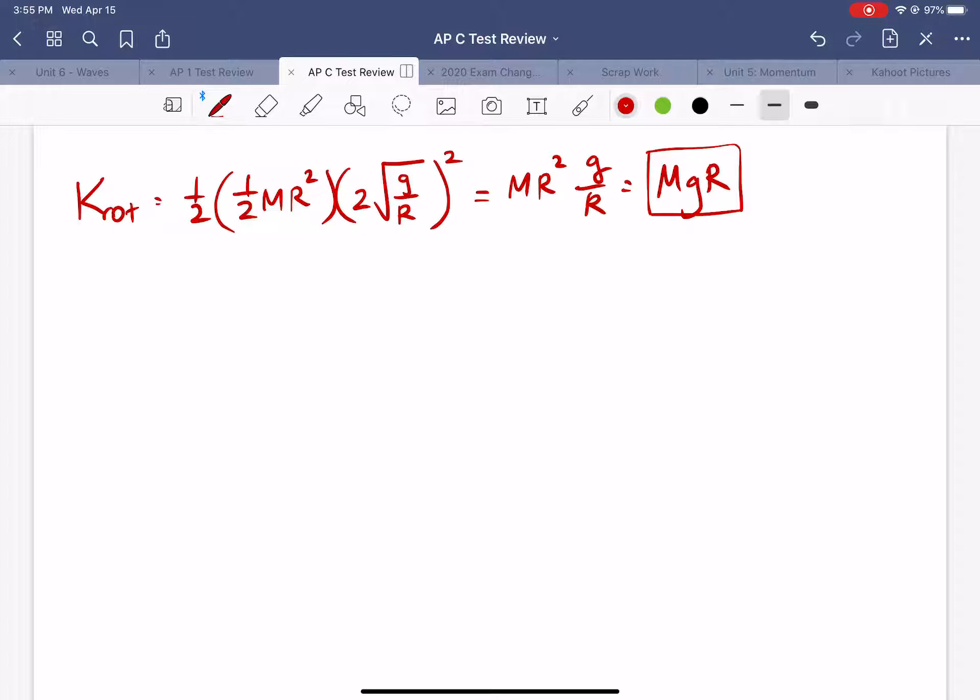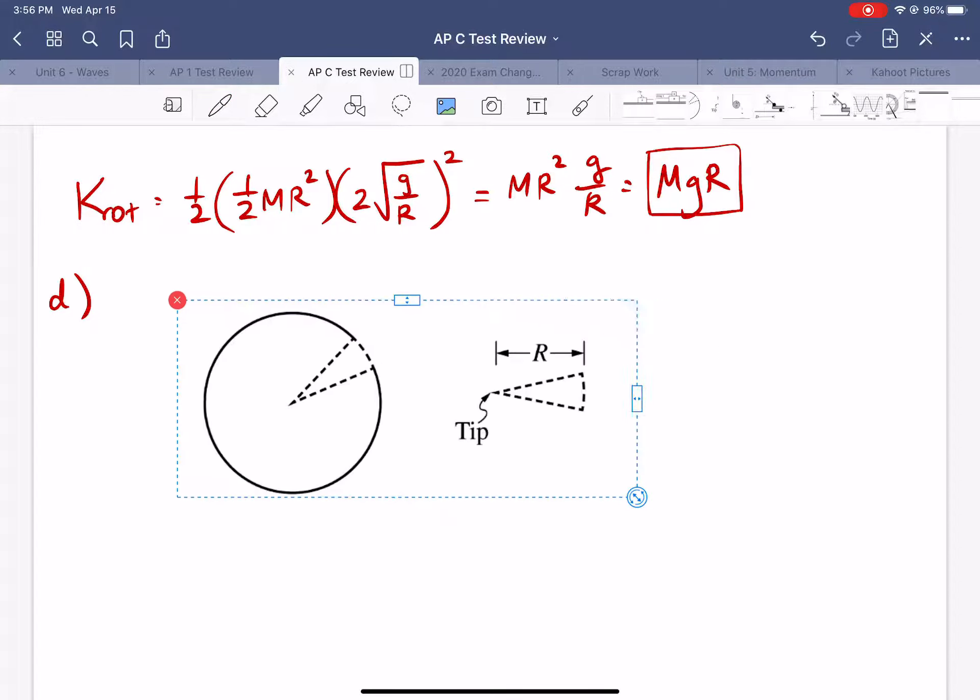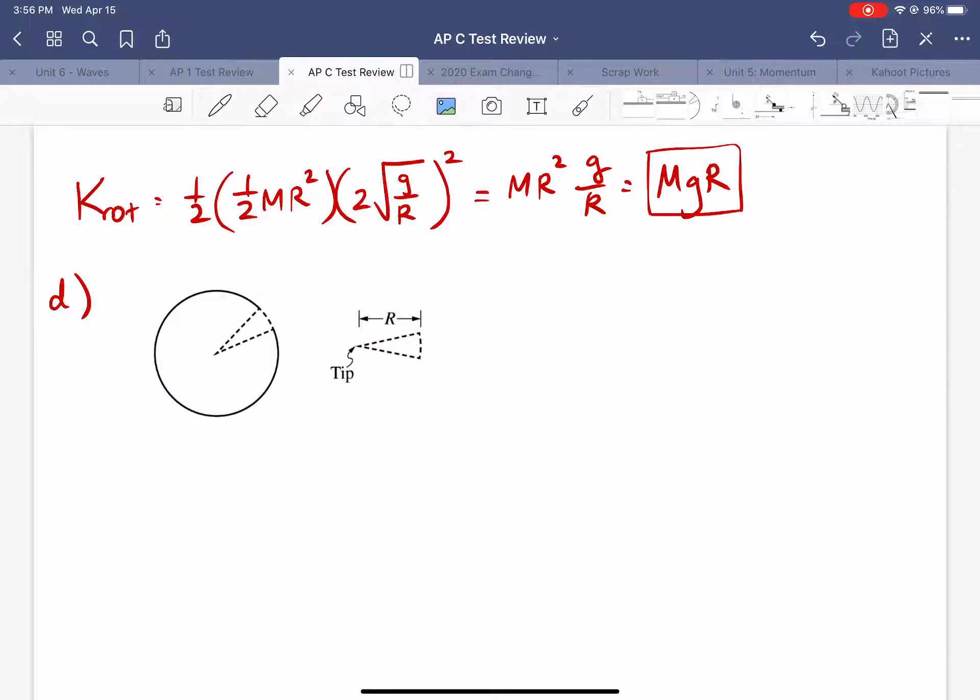All right so there's one more part to this problem which also involves calculus. This one has us using calculus to determine the moment of inertia for just a small wedge that's cut out of this disk. All right so let me pull up this picture here. All right so we're given that the linear mass density of this object here is given by this function. Remember we use lambda to represent linear mass density so this is like mass per length.